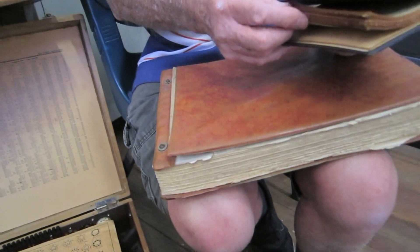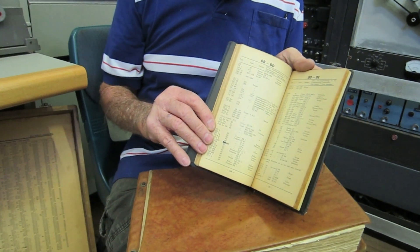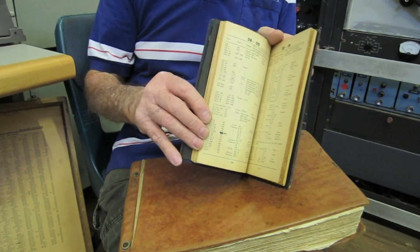There's a valve tube and test card index. So you've got a list of all the tubes and what test cards you use for each one.